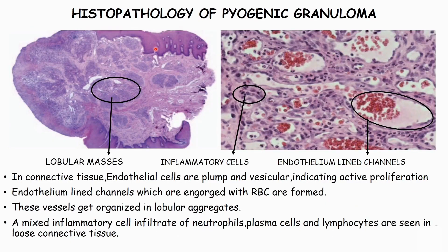The endothelial cells are plump and vesicular, indicating active proliferation. Numerous small and larger endothelium-lined channels are formed, which are engorged with red blood cells.